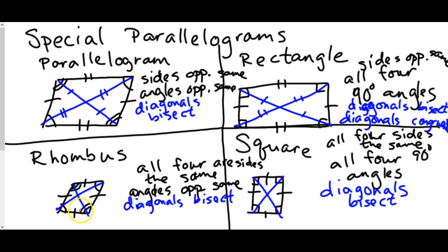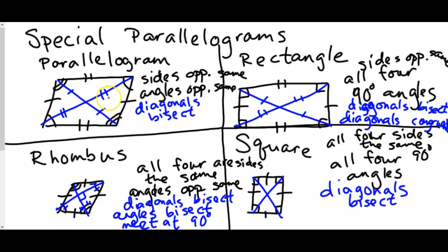A rhombus has a couple of unique diagonal properties. The diagonals bisect the angles, so each side of an angle is the same, and they always meet at a 90-degree angle in the middle. Just like a rectangle or rhombus can be called a parallelogram, a square can be called a rectangle, a parallelogram, or a rhombus — it fits under all those categories and has all of their properties.